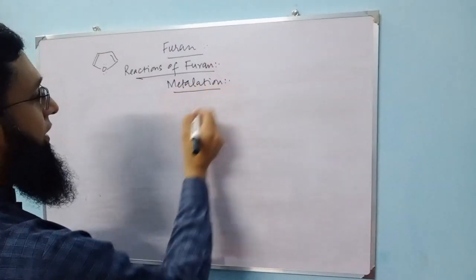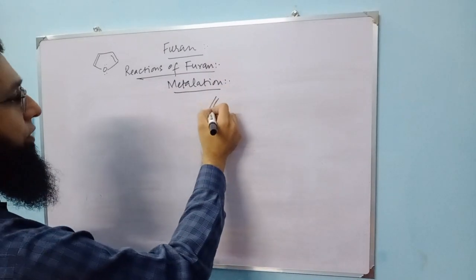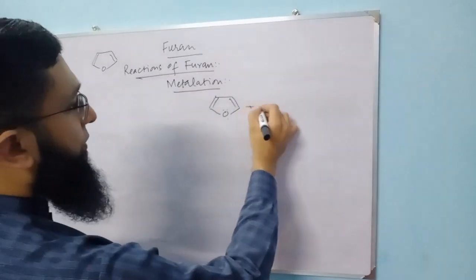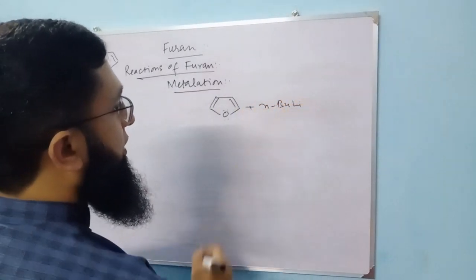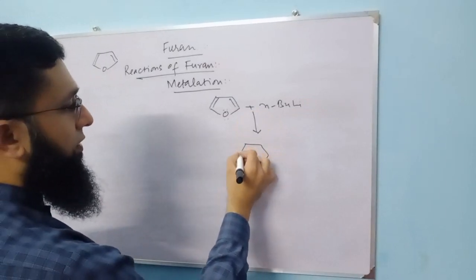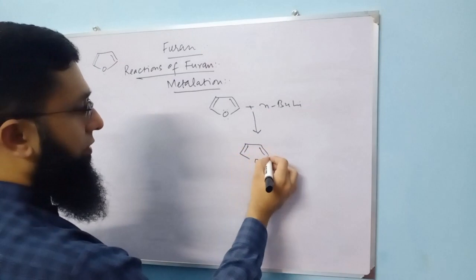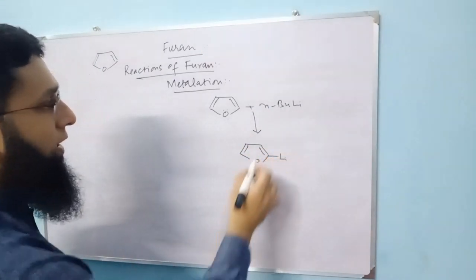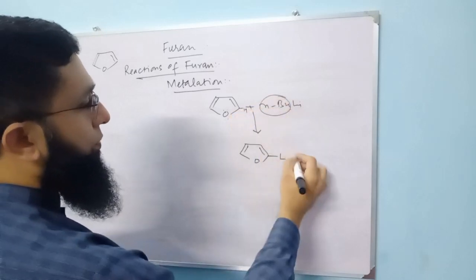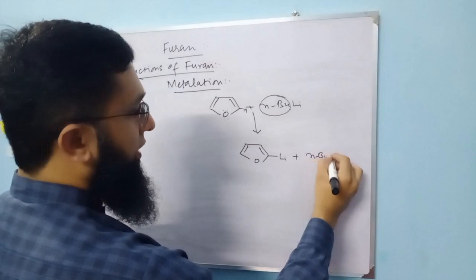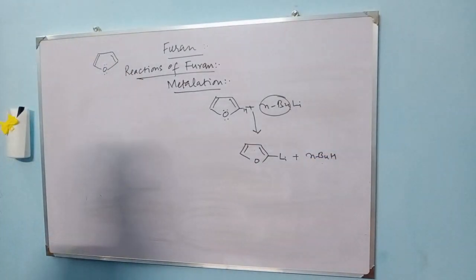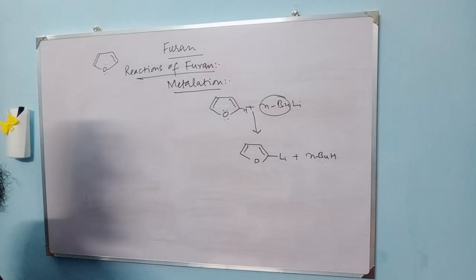The next reaction is metalation. Because the protons at the C2 position are acidic, a very strong base such as n-butyl lithium can convert furan into lithiated furan, and since the proton is abstracted by the base, n-butane is formed as a byproduct. This is the metalation reaction.